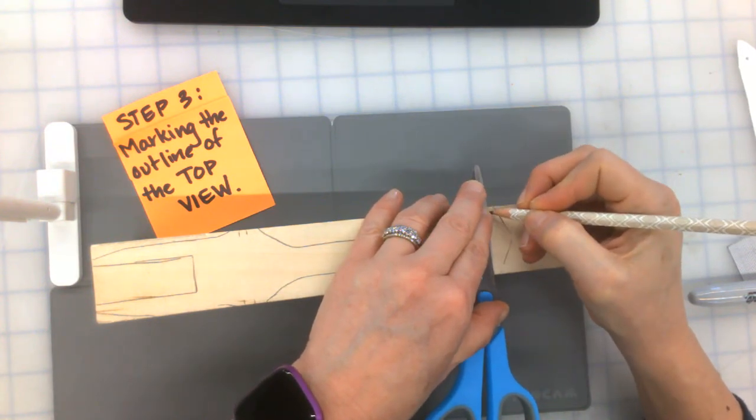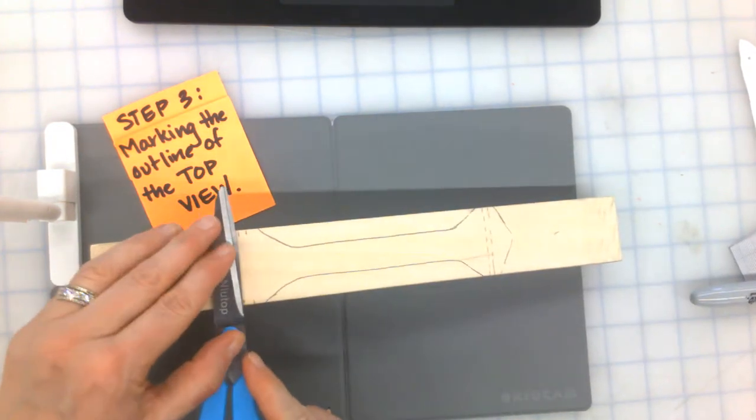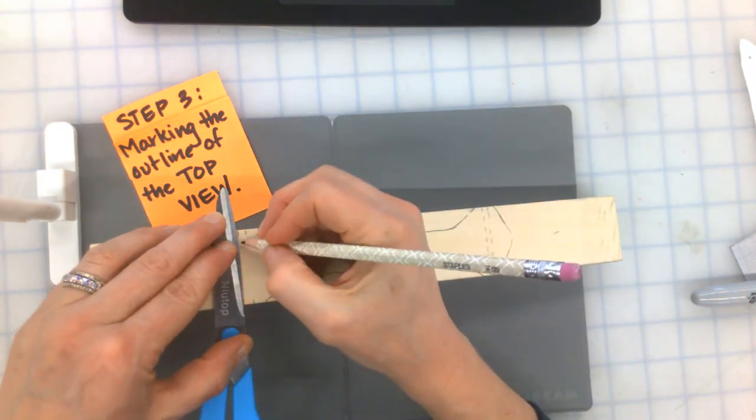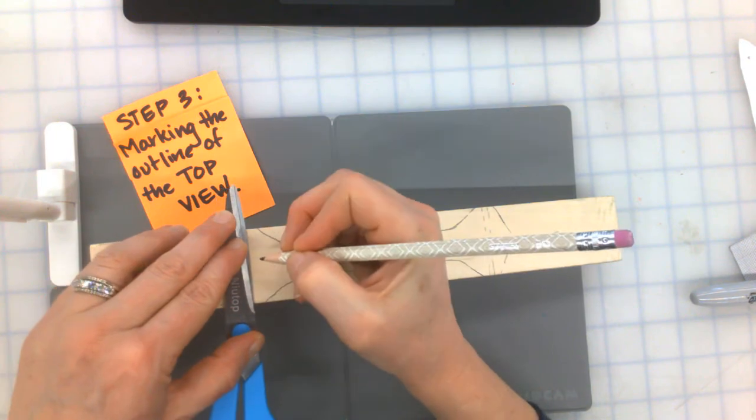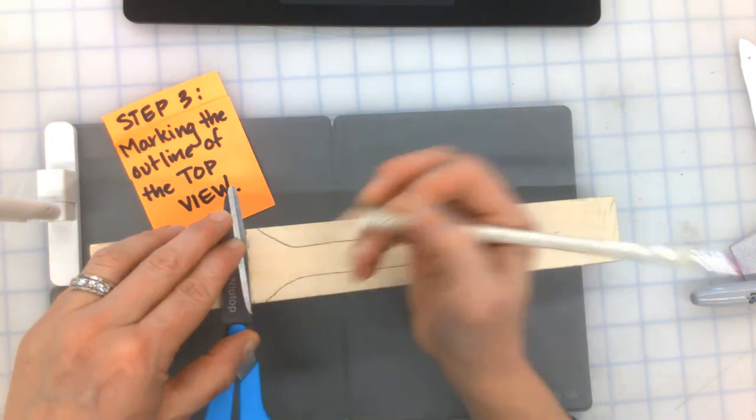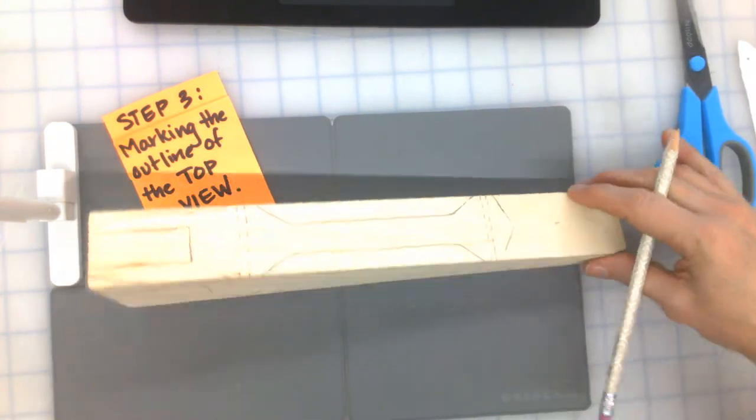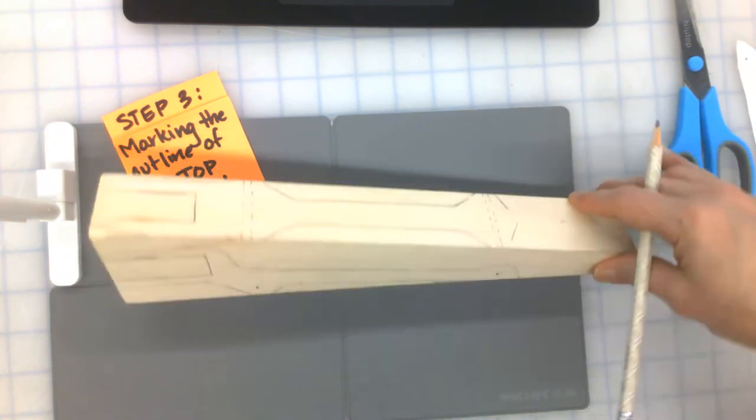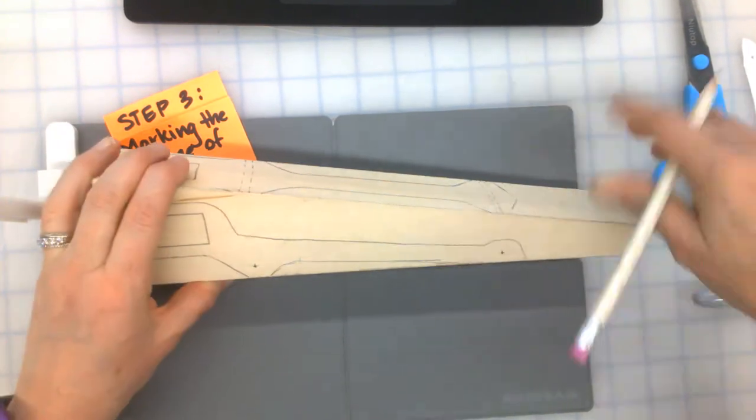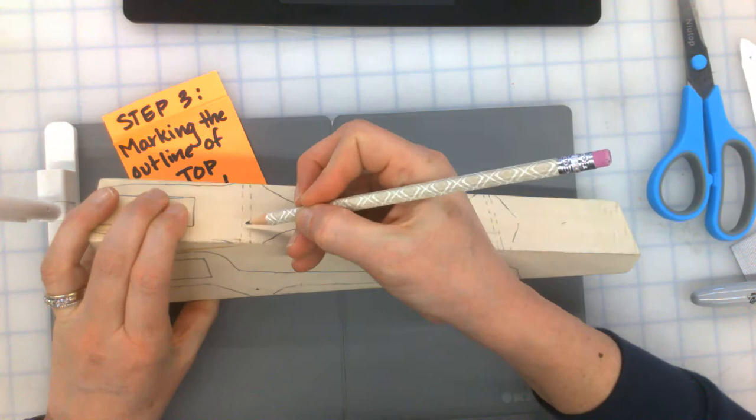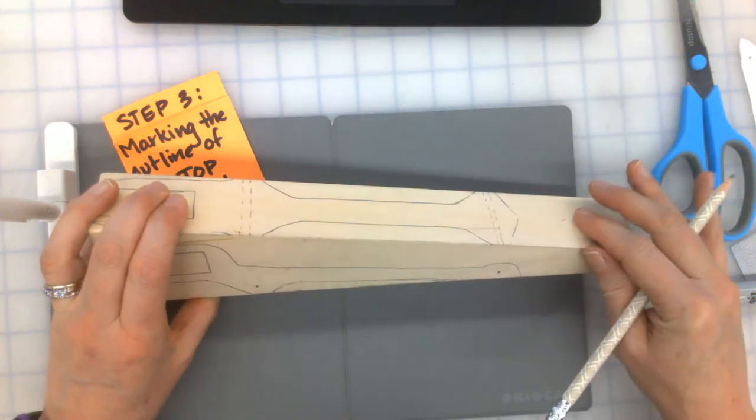Notice I'm using the edge of my scissor as a straight edge. Whatever works, right? Just so I know where the axle holes are. And that makes sense, because they should be lined up just like that, right? This axle hole. All right.